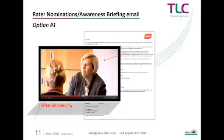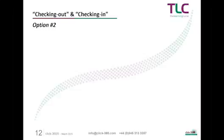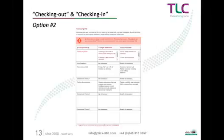Now let's look at option two. This is a process that we call checking out, which is then followed by checking in. In the physical world, we've always coached participants to take the key messages from their 360 reports and then prioritize one strength and up to three development goals. Here's the online version of that — it's just a grid which is completed by the participant inside the action planning part of their interactive workbook.